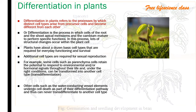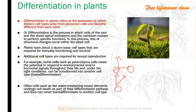Differentiation means the formation of a new cell from a precursor cell. When the precursor cell divides, it forms a new cell — this is called differentiation. The function of the new cell is not necessarily the same as the precursor; it can lead to leaf development, stem development, etc. It is a process in which cells of the root and shoot apical meristem and the cambium mature to perform specific functions.